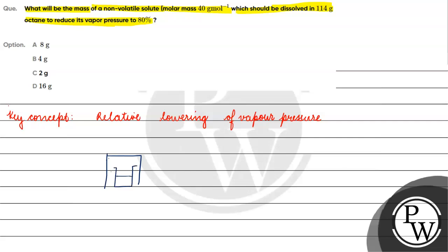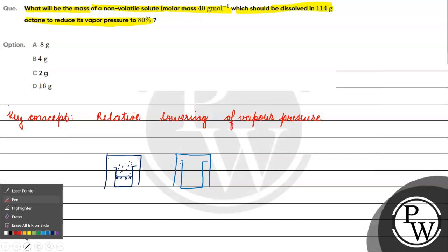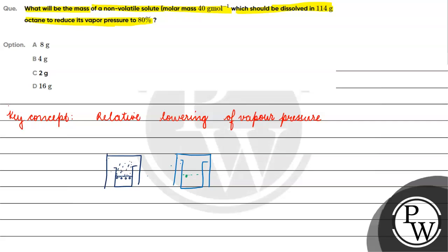When we have solvent molecules with enough energy, they go to the vapor state and exert vapor pressure. Now if we add a non-volatile solute into the volatile solvent, suppose there were 4 solvent molecules before, now we have only 2 solvent molecules and 2 solute molecules. Because of this, the vapor pressure will be less — it will be reduced.